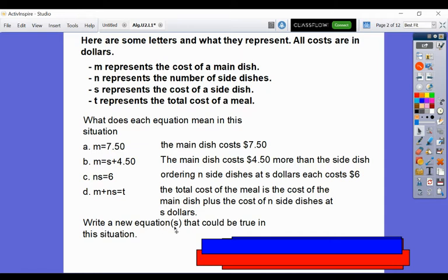So it says write a new equation or equations that can be true in this situation. One of those we talked about earlier is S is $3. And the reason why I know that is because we could do $7.50, which is our M, minus $4.50 equals our S.